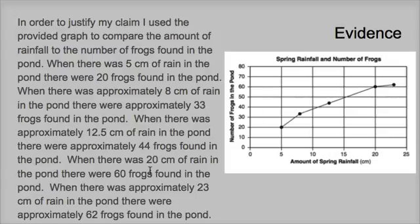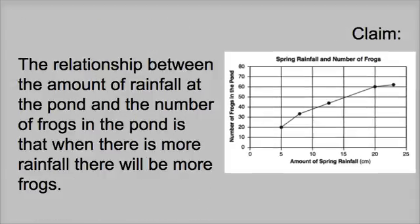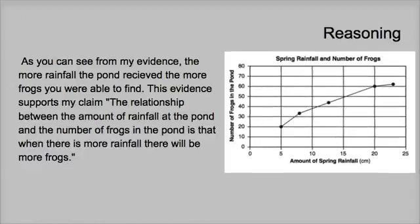Some of you might be saying, well, if that's all we had to do, why can't we just say that for the evidence? The evidence part is where you need to explain the evidence that you used. The reasoning just tells you why this evidence supports this claim. That would be an example of the CER, and as you can see, it's just a couple of sentences in length but it's pretty thorough.